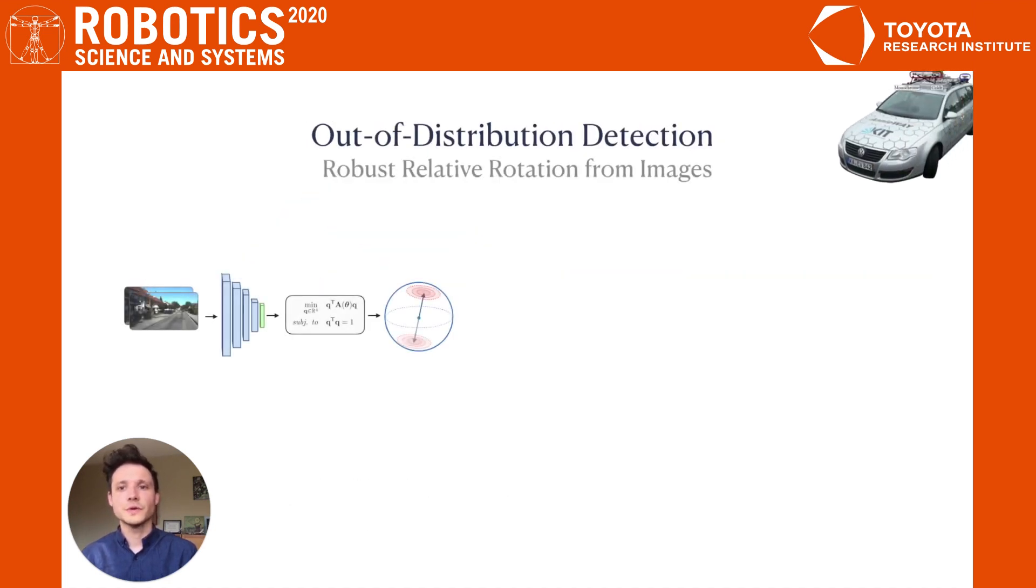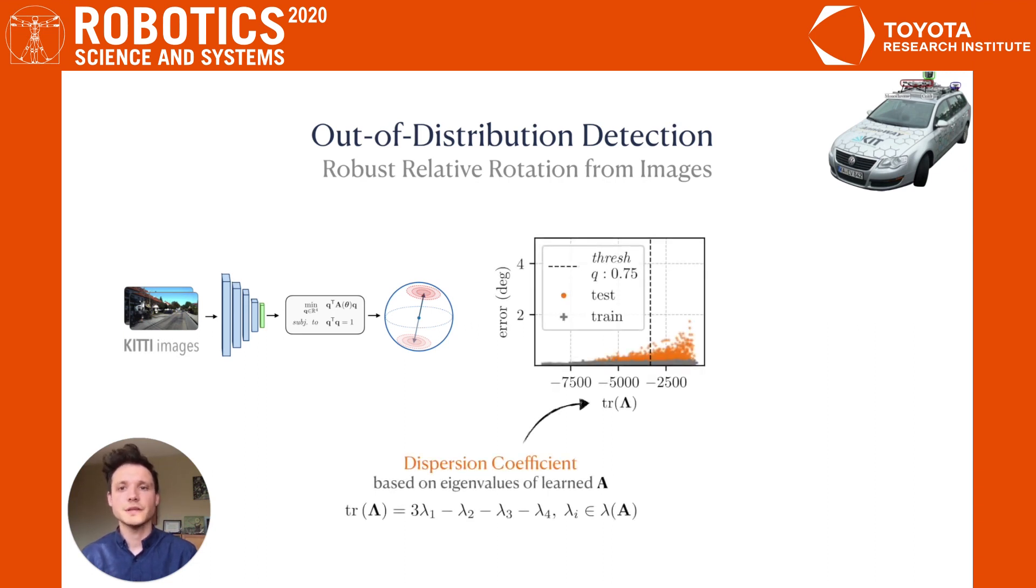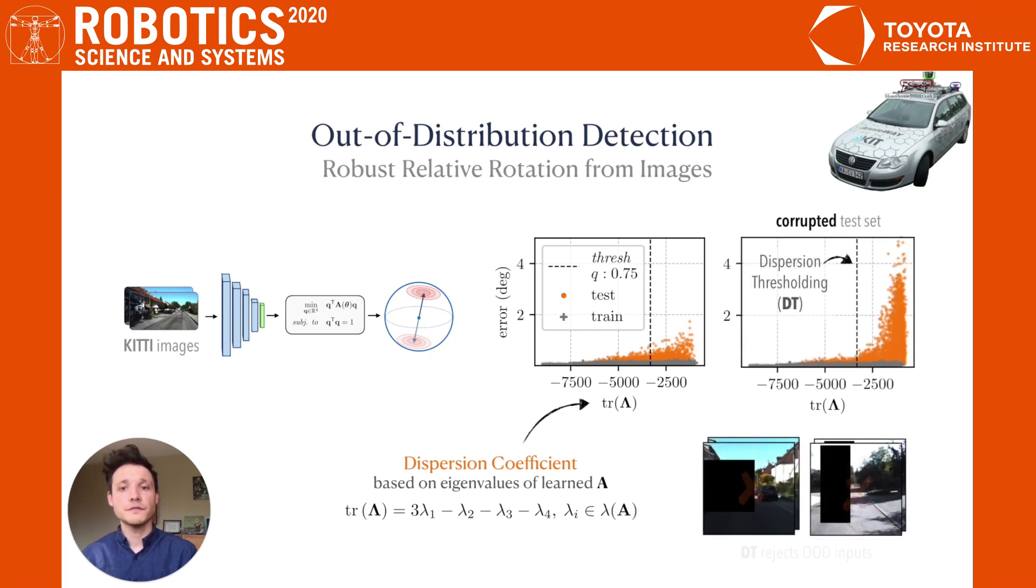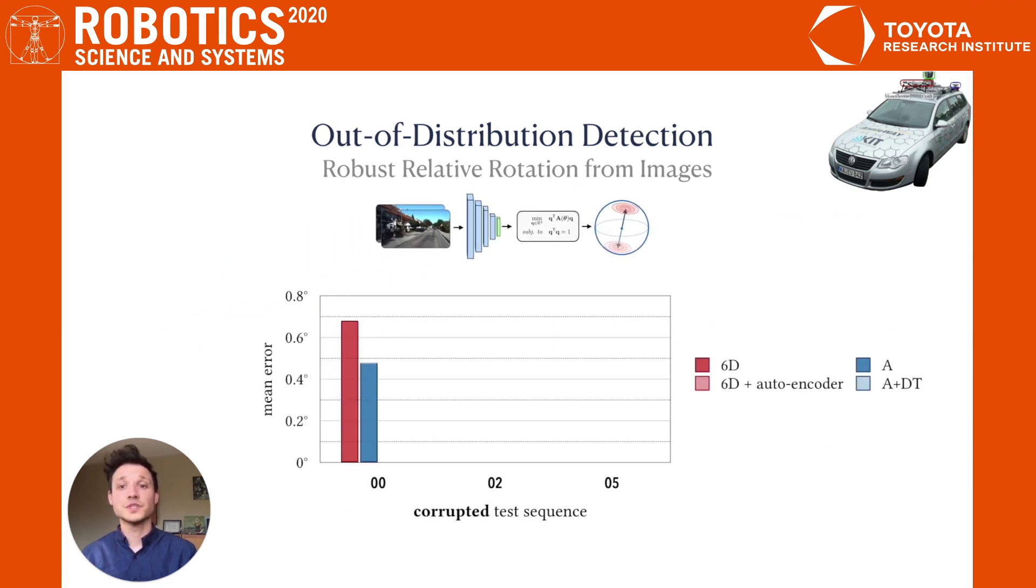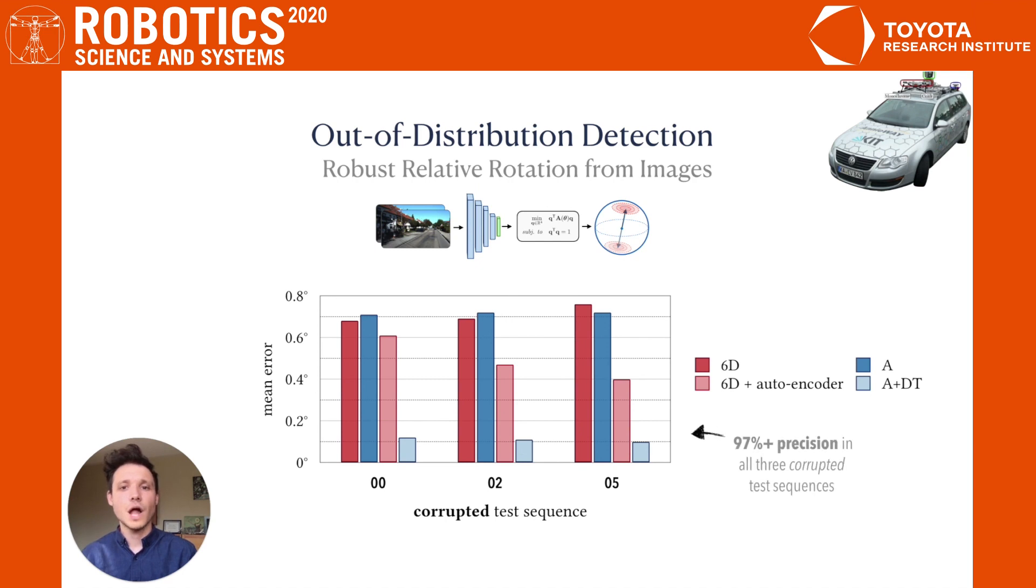Further, we demonstrate through experiments on KITTI data that we can threshold a dispersion coefficient based on the eigenvalue gaps of our learned matrix A to detect and reject out-of-training distribution samples at test time. We show the power of this approach by artificially corrupting test images with dark rectangular regions. This technique, which we call dispersion thresholding, requires no additional training or parameter tuning and outperforms an autoencoder based novelty detection mechanism while maintaining high precision on all three KITTI test sequences.